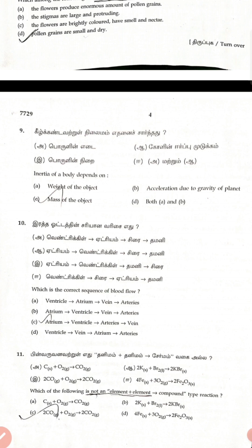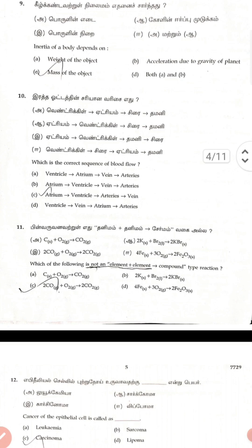Atrium, Ventricle, Arteries, Veins. The tenth answer: Not element to element. The second is Carbon Dioxide plus O₂ gives Carbon Dioxide plus O₂.